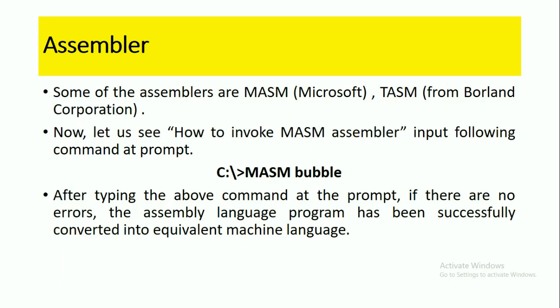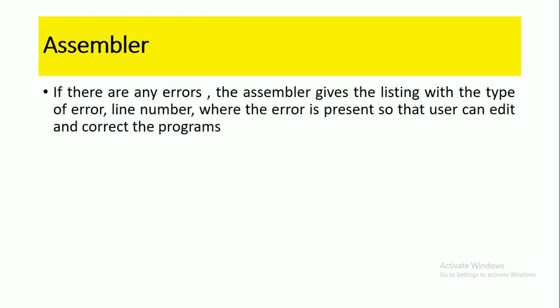After typing the command at the DOS prompt, if there are no errors, the assembly language program is successfully converted into equivalent machine language. If there are errors, the assembler gives a listing with the type of error and line number where the error is present, so that the user can edit and correct the program very easily.